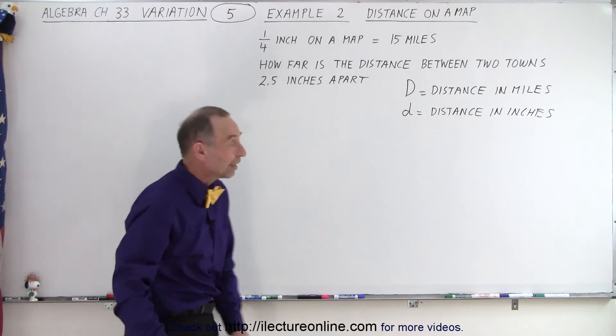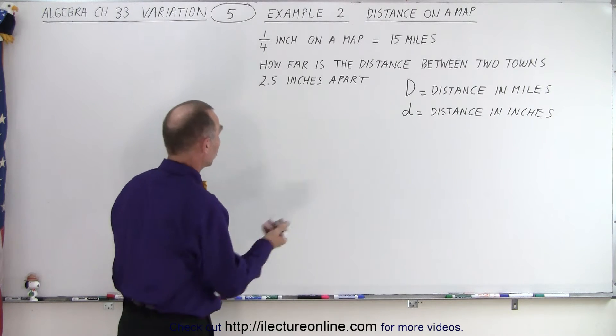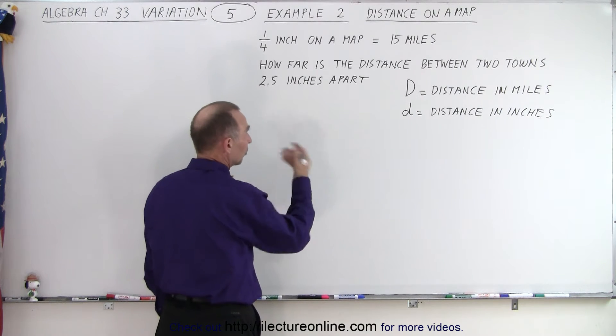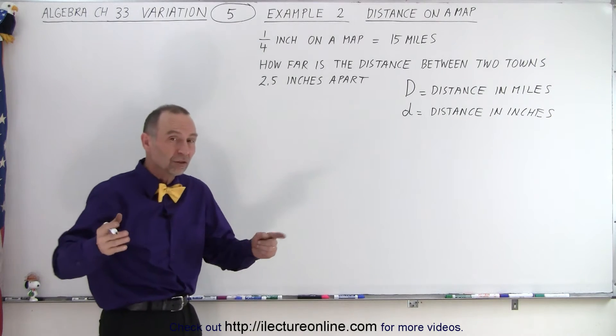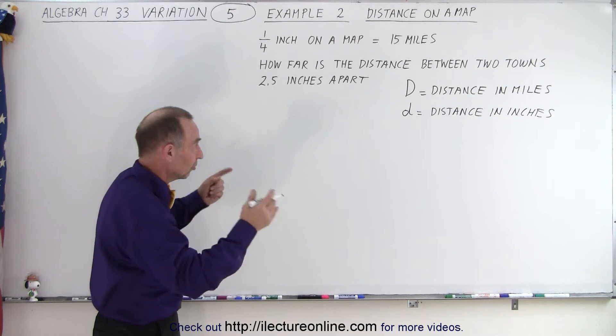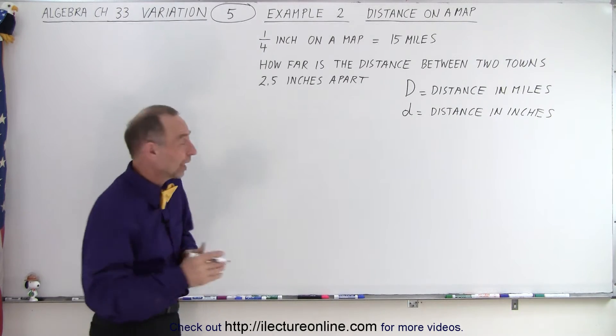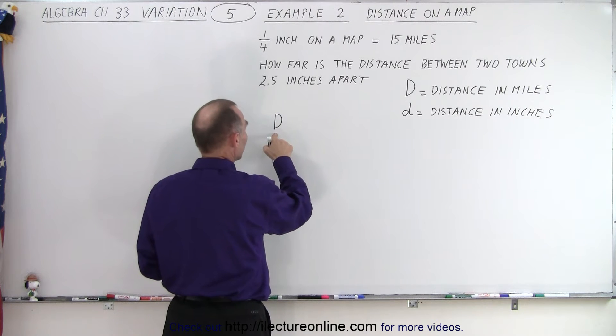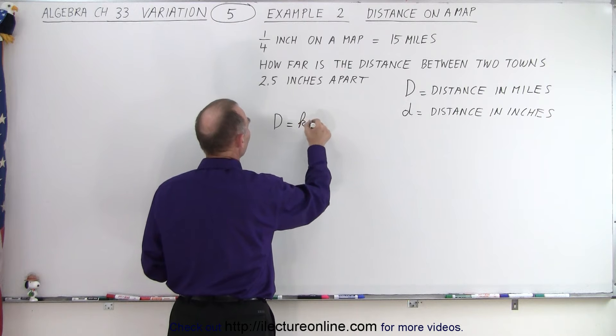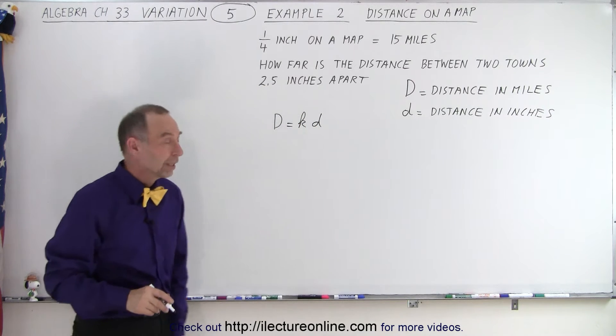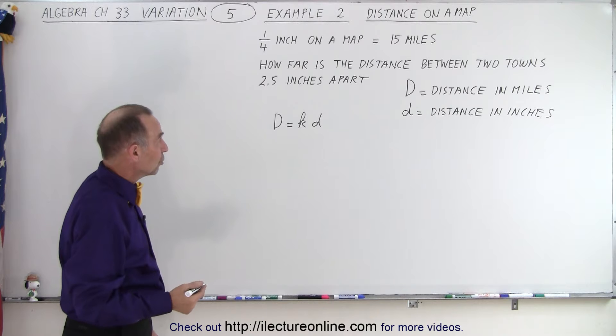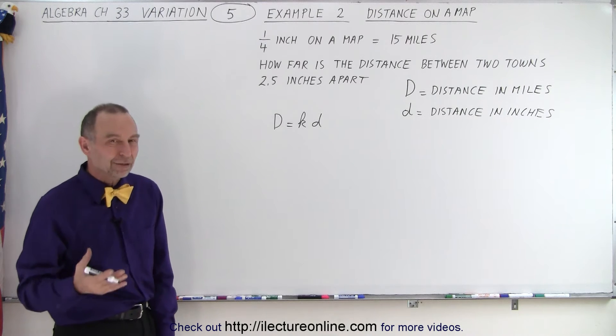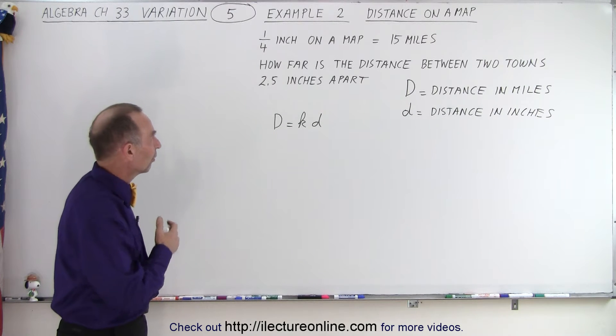Okay, now that we have that, we have some relationship. The distance in miles between two cities is directly proportional to the distance in inches on the map, so that can be written as follows: big D equals k times little d, and then what we need to do is figure out the value for k, that constant of proportionality or constant of variation.